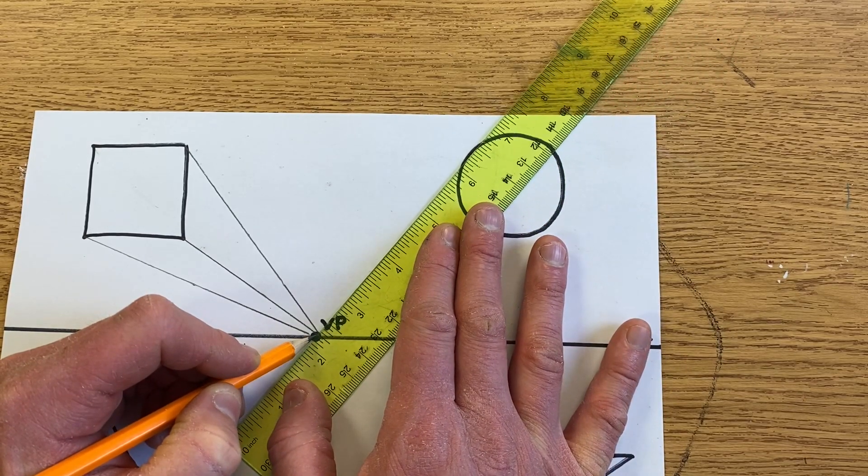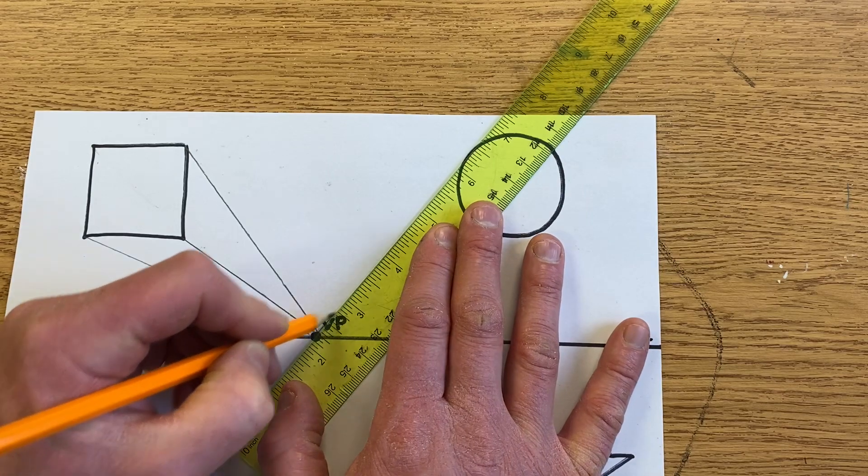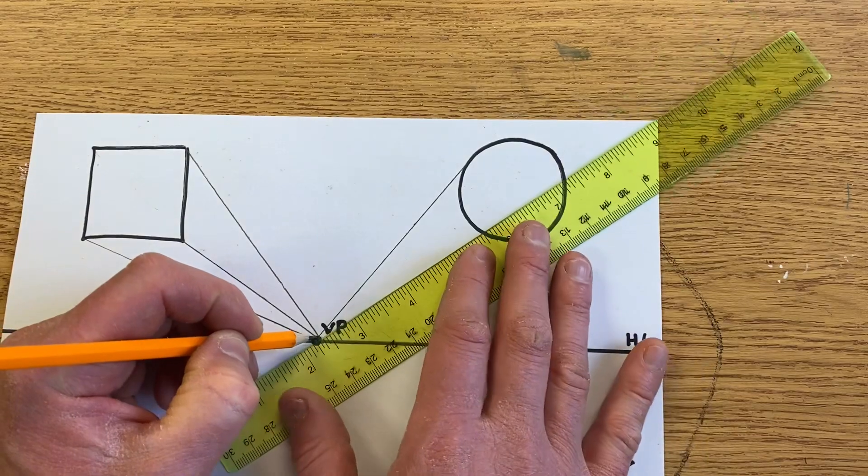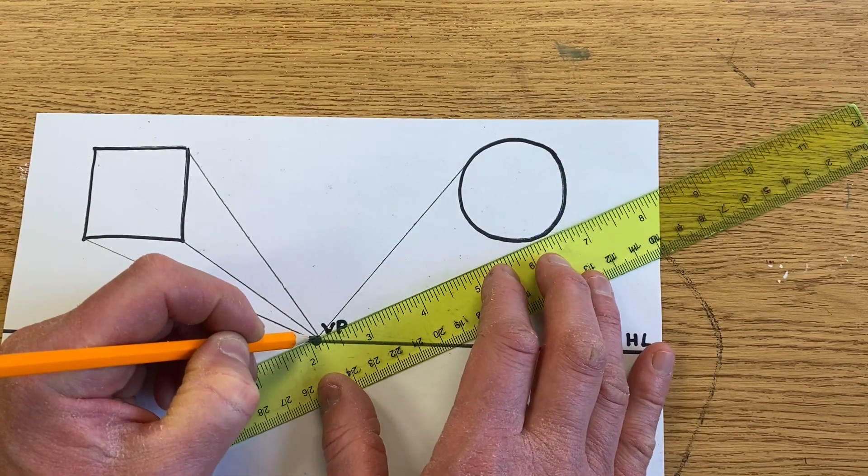As far as I can go on the side of the circle, then I draw my line. Do the same thing for the other side. This is only going to have two lines.